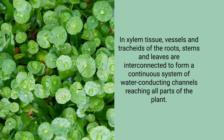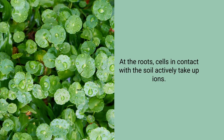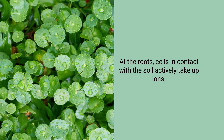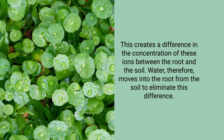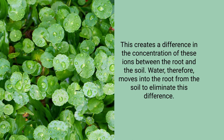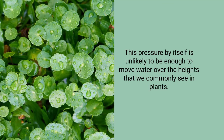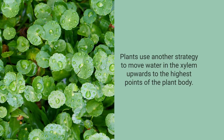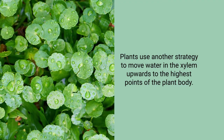All root cells in contact with the soil actively take up ions, creating a concentration difference between the roots and soil — so water moves into the root from the soil to eliminate this difference. This creates a steady movement of water into the root xylem, creating a column of water that steadily pushes upward. However, this pressure alone is unlikely to be enough to move water to the height we commonly see in plants, so plants use another strategy.